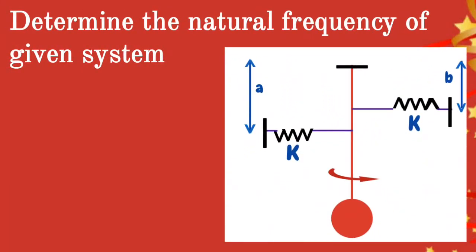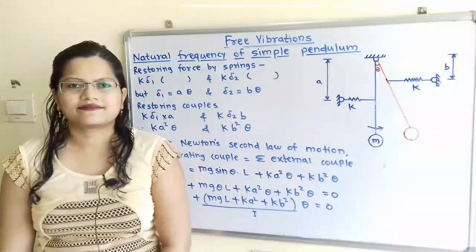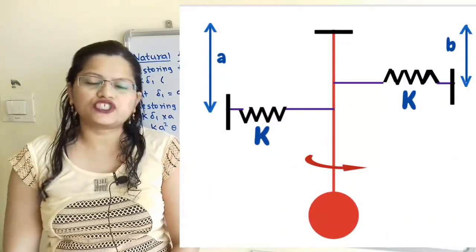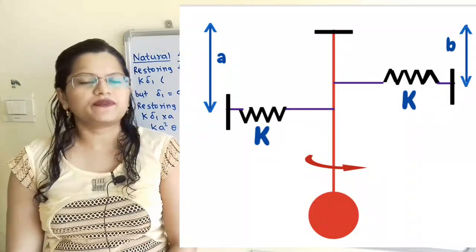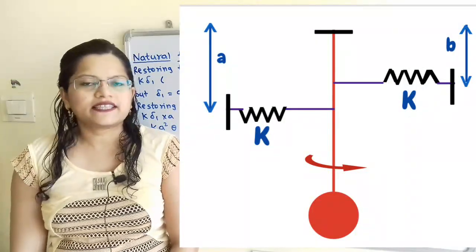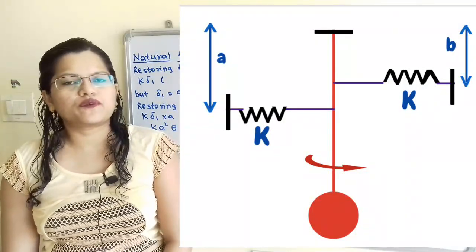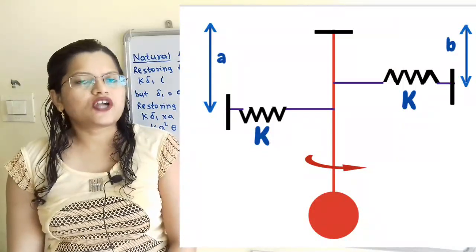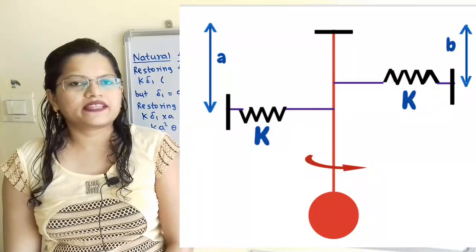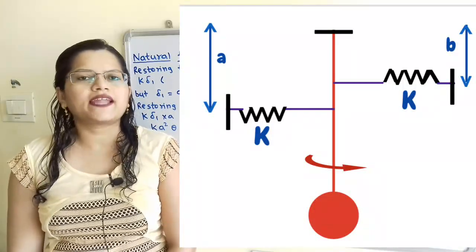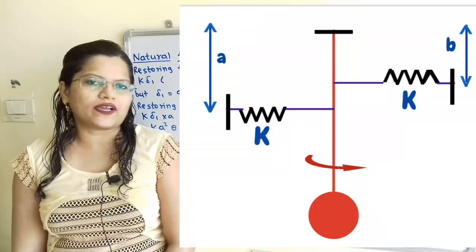Determine the natural frequency of the given system. If we observe the given position for a simple pendulum which is attached to two springs, the mass M is moving towards the right-hand side direction. We will draw the free body diagram when mass M is displaced through an angle theta in the clockwise direction.